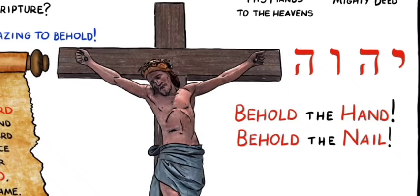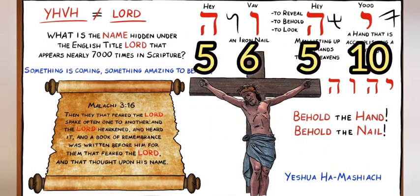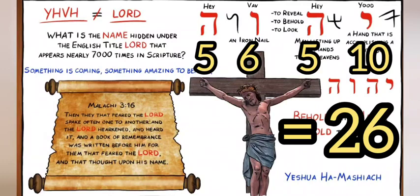A lot of times people will say, why does God equal 26, or why does the name of God equal 26? Well, it's because it's in these Hebrew letters, Yod-Heh-Vav-Heh, and that equals 10-5-6-5. This screenshot was from C.J. Lovick's video — I can link that.